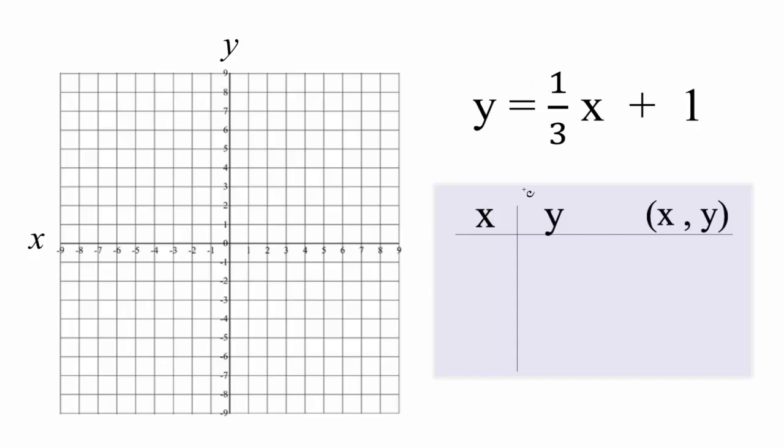Let's start by putting 3 in for x. One-third times 3 is 1, so 1 plus 1 is 2. That's a little easier to do it that way.